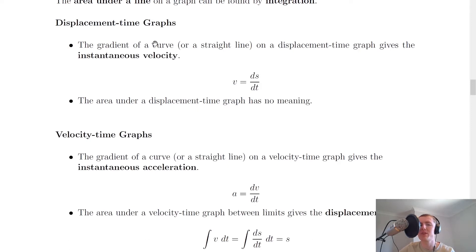So for displacement time graphs first of all, it says that the gradient of a curve or a straight line on a displacement time graph gives the instantaneous velocity. And that's because we've already seen this expression, v equals ds by dt. So that's your differentiation there. The area under a displacement time graph however has no meaning.